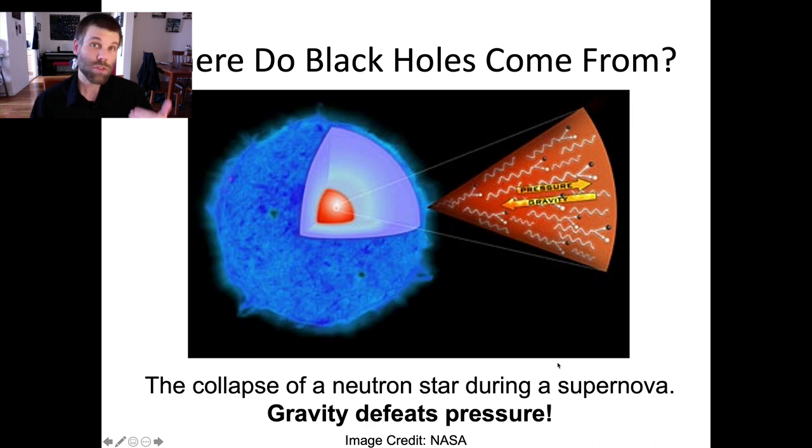This time there's nothing to stop that collapse, so all of the mass in that neutron star falls down to a single point that becomes the singularity of the black hole, and a new black hole is born.